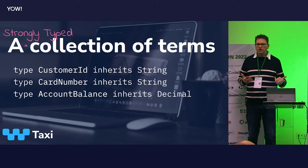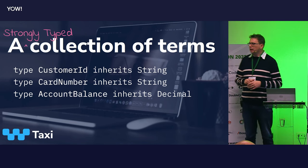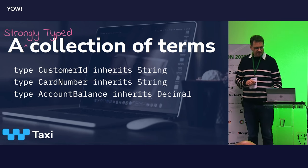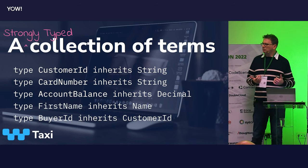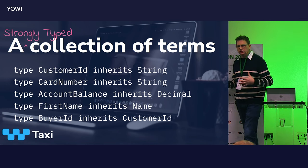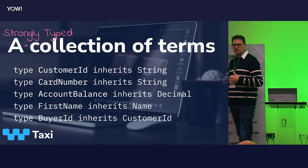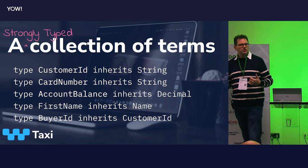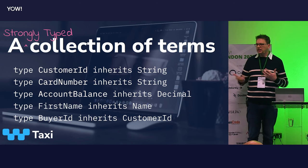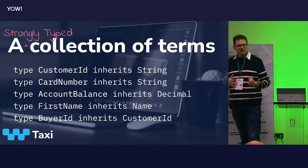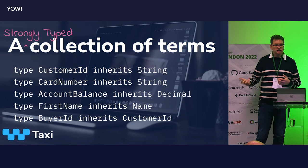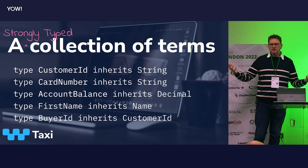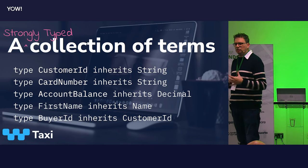We end up with a strongly typed collection of terms. We can say a customer ID is also a string, a card number is a string, an account balance is a decimal. And because it's a type system, not just a series of tags, we can do cool stuff with it. We can say a field is not just any old name but it's a first name — and because it's a type system, all the OO principles apply. All first names are names, but not all names are first names. We can inject specificity. Or we can inject context — if a transaction has both a buyer and a seller modeled by customer IDs, we can say this is a buyer customer ID and this is a seller customer ID. We can move up and down abstraction levels to inject specificity or context.